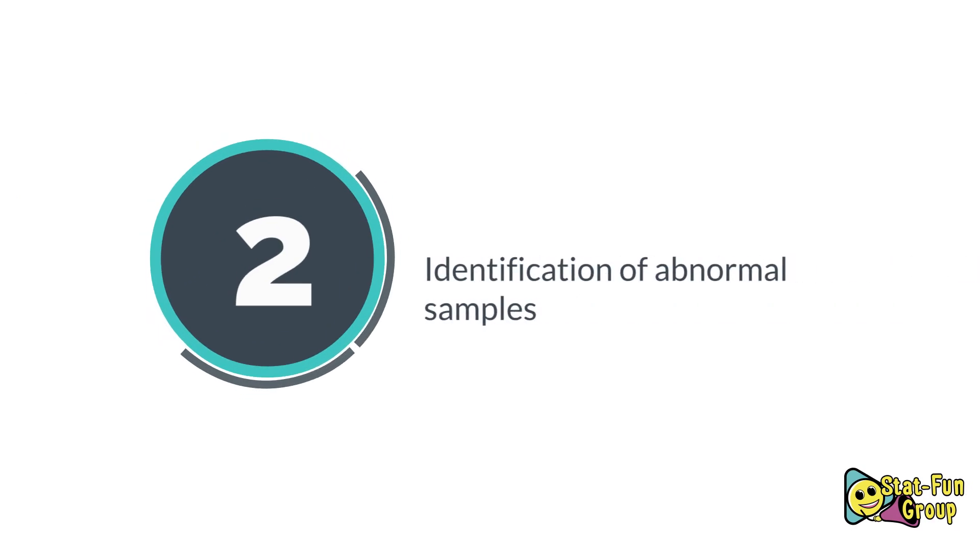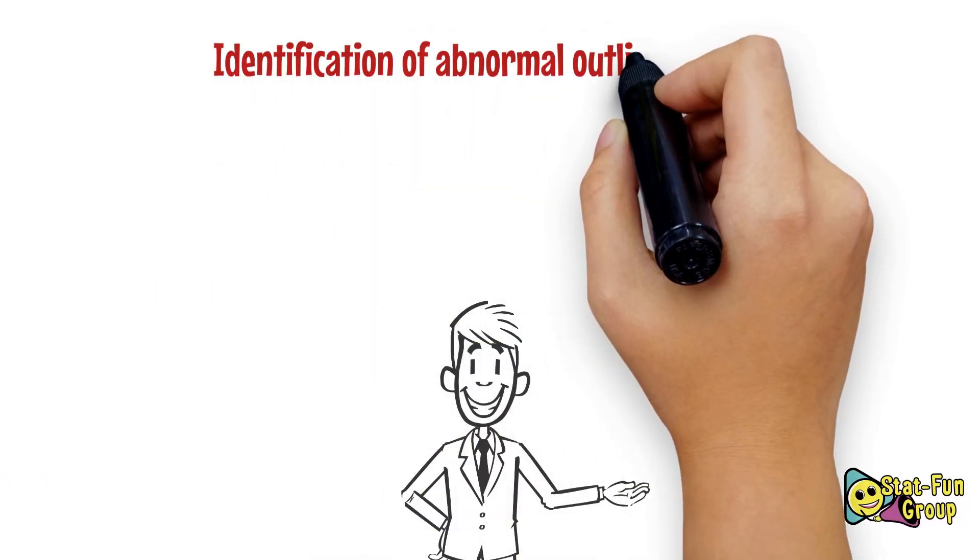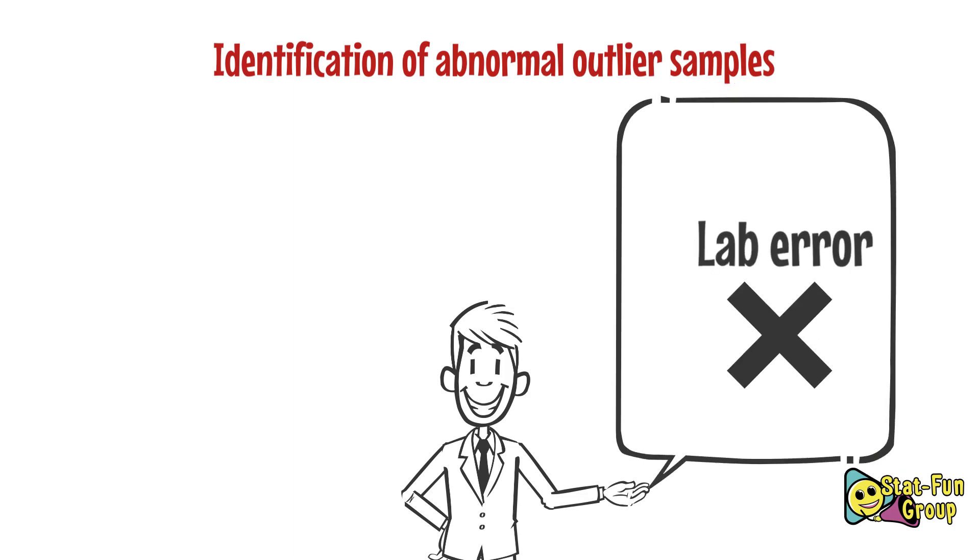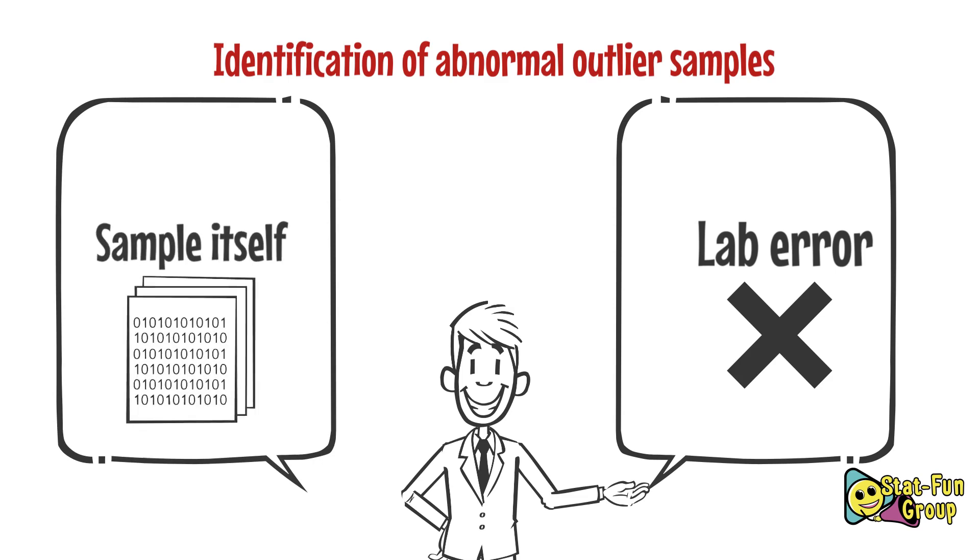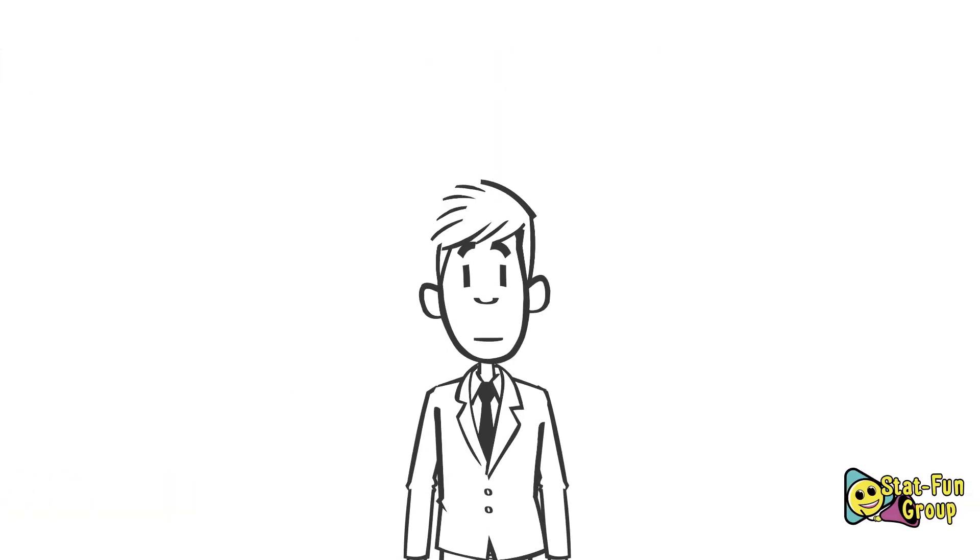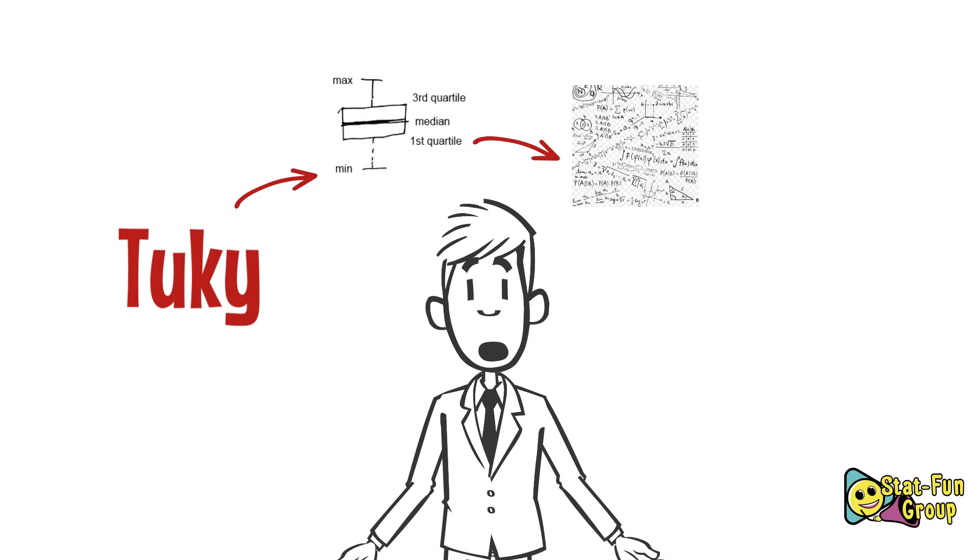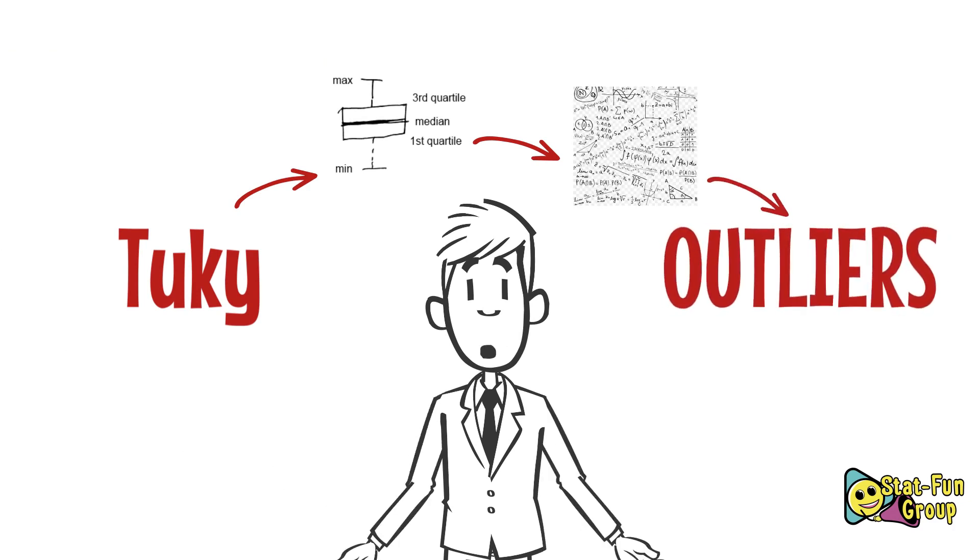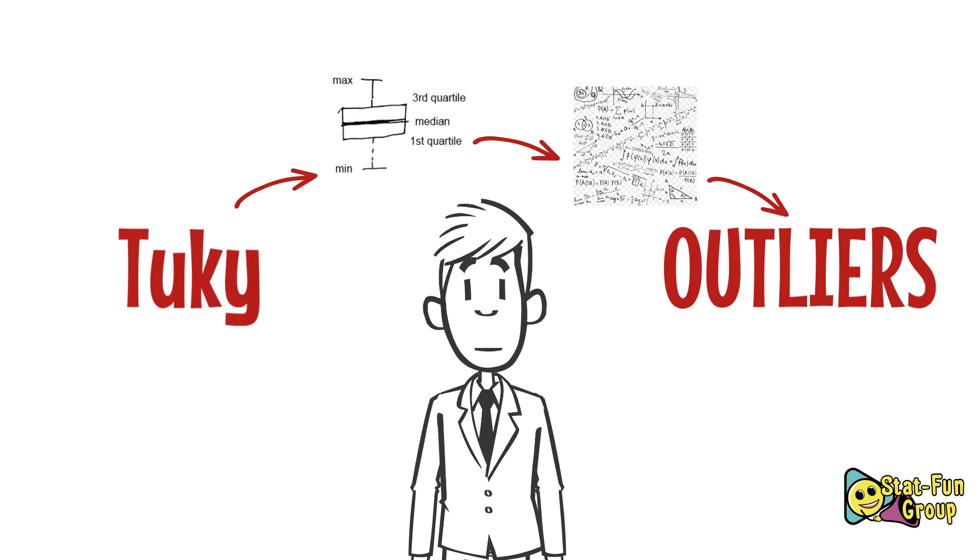Number two: identification of abnormal samples. The second use of boxplot is the identification of abnormal outlier samples. Outliers may be caused by a lab error or by the sample itself. Tukey, who invented the boxplot, defined a mathematical way to identify abnormal samples. Technically, these data are called outliers.